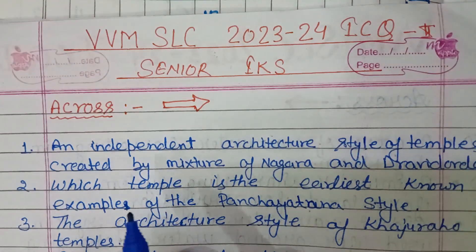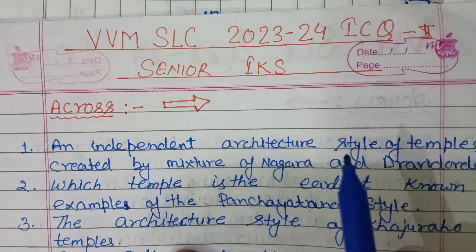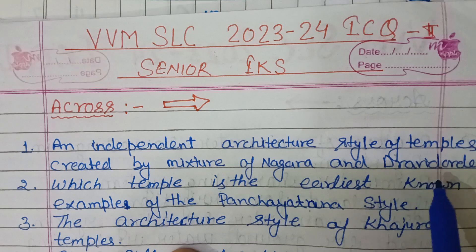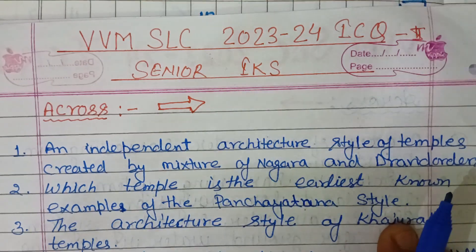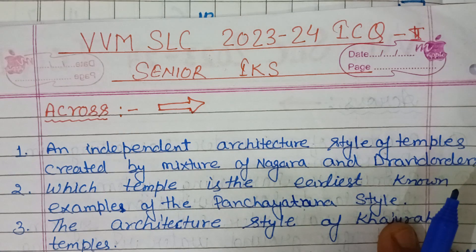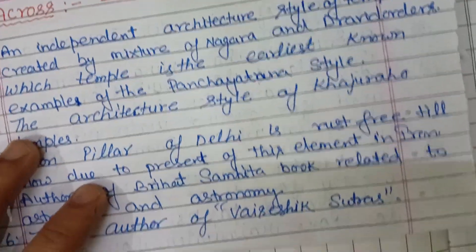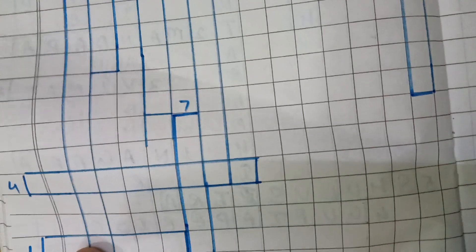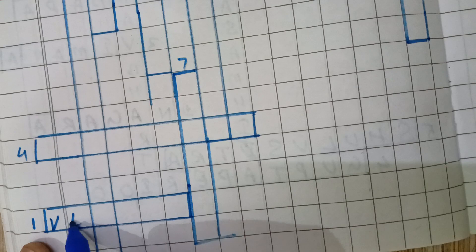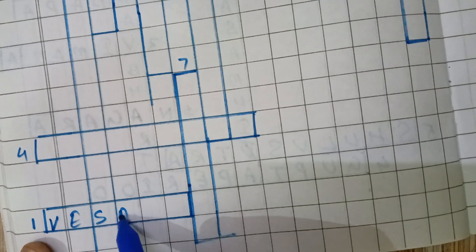First question: an independent architecture style of temples created by a mixture of Nagar and Dravid order styles. This independent style is known as Vesara. Number one across — Vesara.